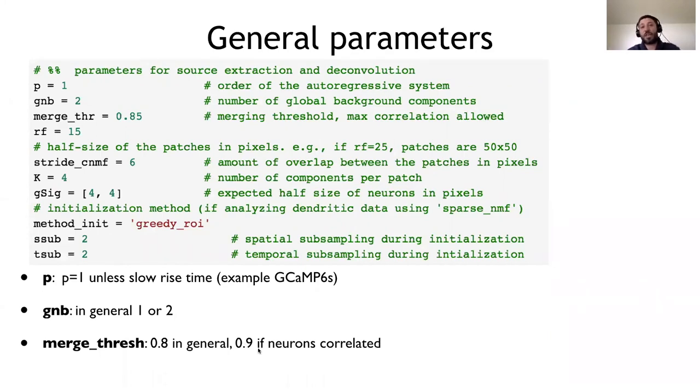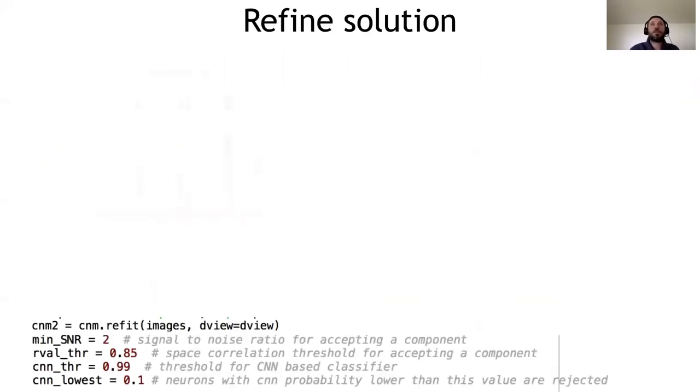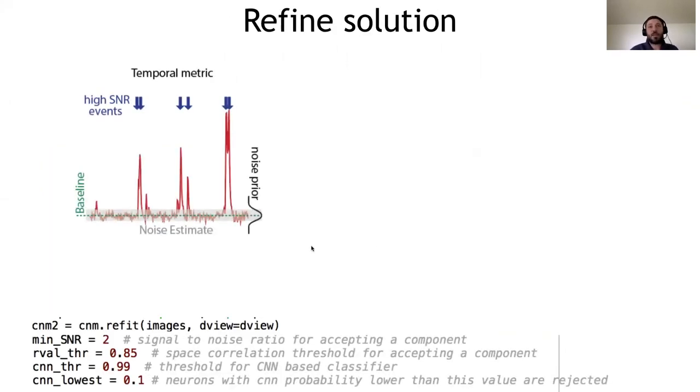If you have neurons that are very correlated, for instance, if you're photo stimulating neurons, then you might use 0.9 so that you avoid the algorithm to start putting together neurons that are actually different neurons. So we saw how do we initialize the algorithm on different patches. What happens when we put them together, we want to refine the solution using some quality criteria. So the criteria that we have are three.